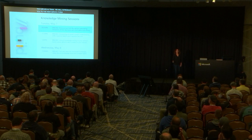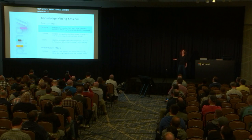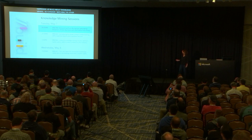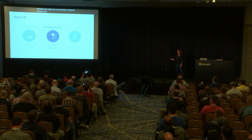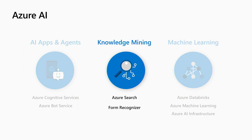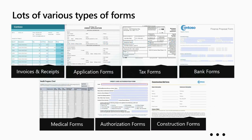This is the first session from several sessions happening at Build about knowledge mining, so consider attending the other sessions — they're all about knowledge mining and how you can extract insights from your content. Azure AI is comprised of three main solutions: AI apps and agents, machine learning for creating and managing models, and knowledge mining. Knowledge mining is comprised of Azure Search and Form Recognizer, and this session will focus on the new Form Recognizer service.